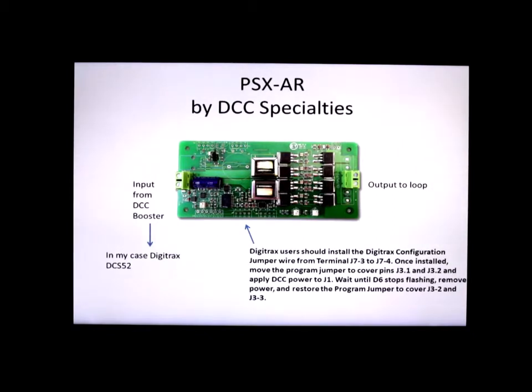This is a picture of the PSX-AR Auto Reverser. It's a very simple configuration hookup. There's two terminals on the left and a two terminal strip on the right. The two terminals on the left connect to the DCC booster. In my case that's a Digitrax DCS-52. I don't have another external booster. The booster is built into the DCS-52. So the left hand side connects to the power from the booster and the right hand side connects to the loop.